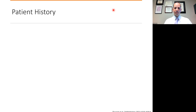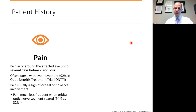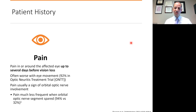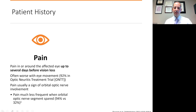What about the patient history? One cardinal feature is pain, typically in or around the affected eye. Interestingly, it can happen up to several days before the vision loss. Some patients have the pain at the exact same time as vision loss. The pain is often worse with eye movement, and that was true in about 92% of patients in the optic neuritis treatment trial. Pain is usually a sign of orbital optic nerve involvement — a paper by Fisoni et al. in 2003 looked at the segments of the optic nerve involved when there was pain, finding pain was much less frequent when the orbital optic nerve segment was spared.